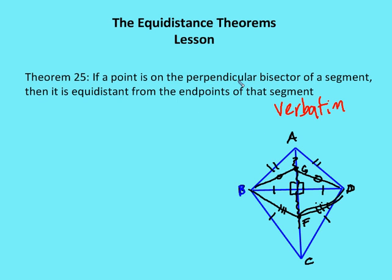So again, theorem 25, if a point is on the perpendicular bisector of a segment, then it is equidistant from the endpoints of that segment.